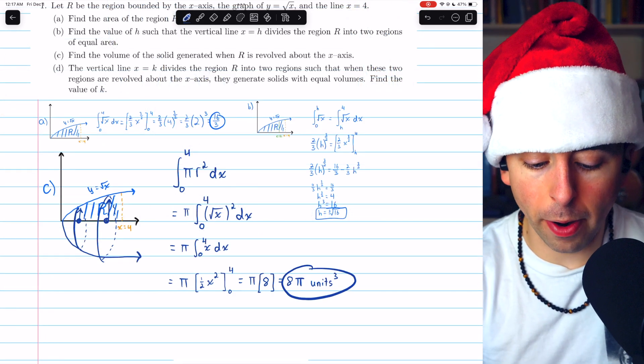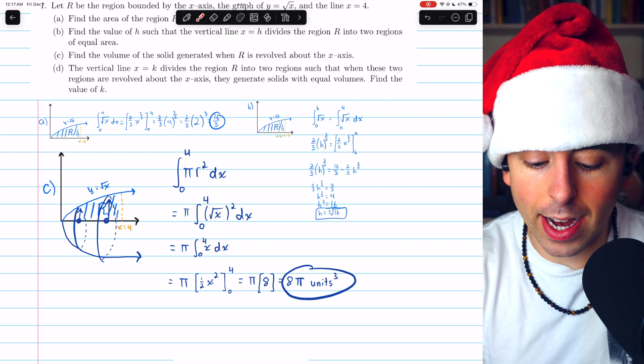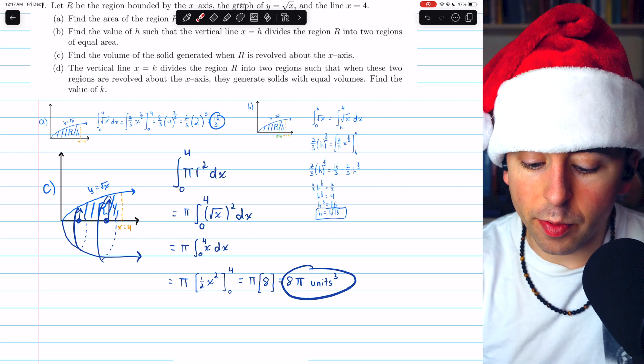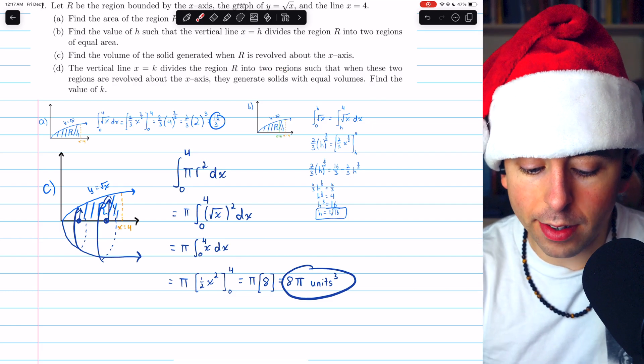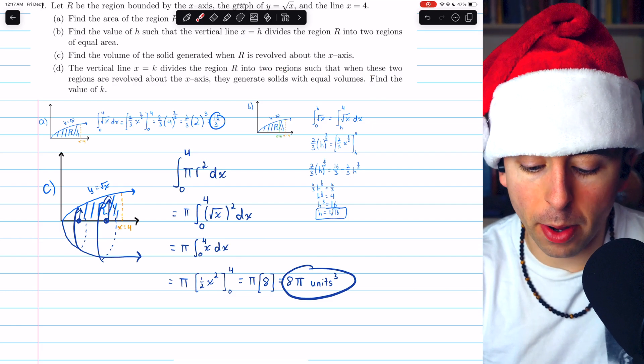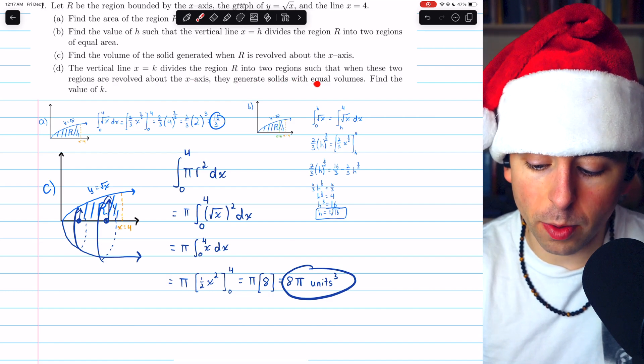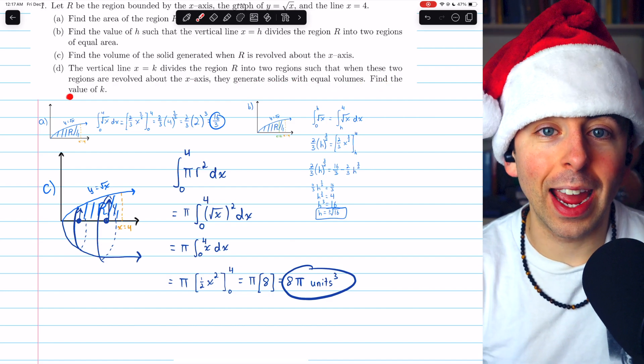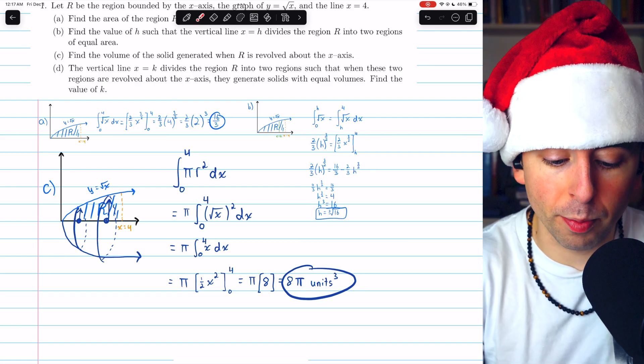Finally, we can move on to part D. This is very similar to part B. The vertical line X equals K divides the region R into two regions, such that when these two regions are revolved about the X axis, they generate solids with equal volumes. We need to find the value of K that causes this. So it's just the three-dimensional version of problem B. We need to find a vertical line so that the solids of revolution on either side of that line will be equal.